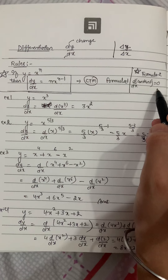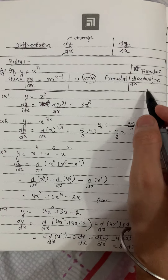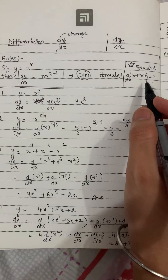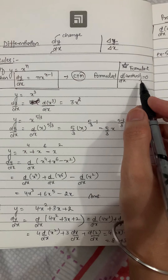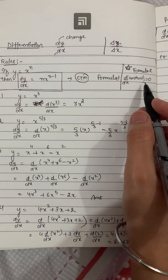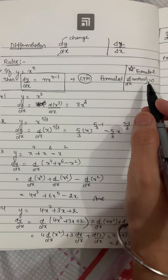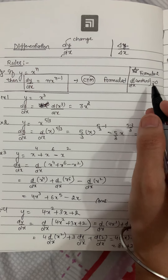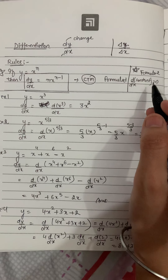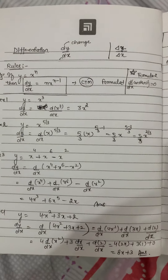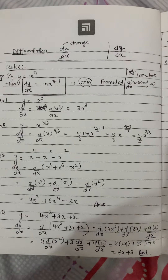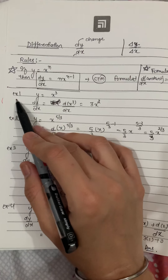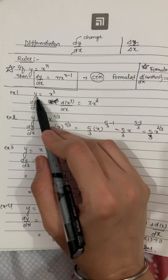If you need to take the derivative of a constant number, that is always 0. The reason the derivative of a constant number is 0 is because the constant number is not changing with respect to x, so its value will be 0.